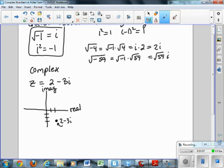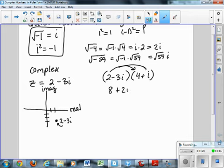I can also do some operations on complex numbers. For example, I could multiply 2 minus 3i times 4 plus i, and if I multiply this out, I would say 2 times 4 is 8, 2 times i is 2i, negative 3i times 4 is negative 12i, and negative 3i times i is negative 3i squared.